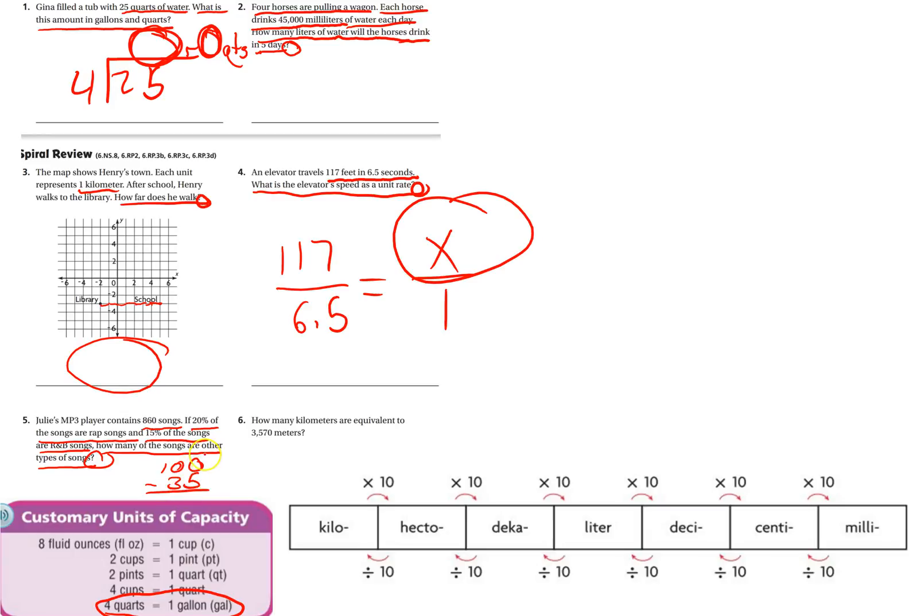So if 35% of them are rap and R&B, that leaves 65% are other songs. So she has 860 total. We can change this to a ratio: 65% is 65 over a hundred, and 860 is our... remember, fractions are always part over the whole. And in this problem, Julie's mp3 player contains 860 songs. That's the whole, the total number of songs.